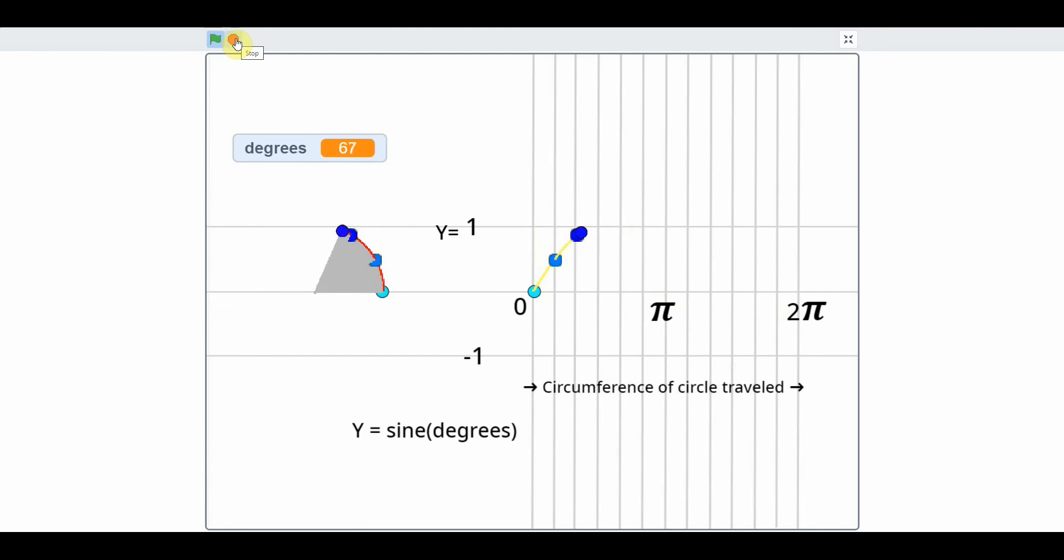So the Y coordinate on a moving point going up and down with that point that's circling traces out a sine wave.